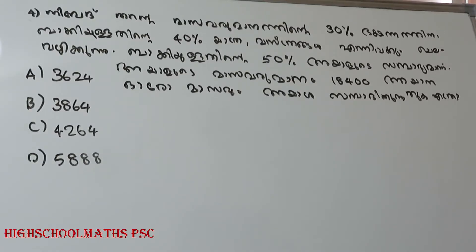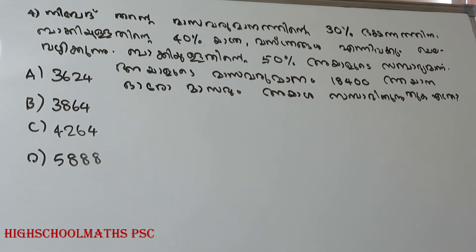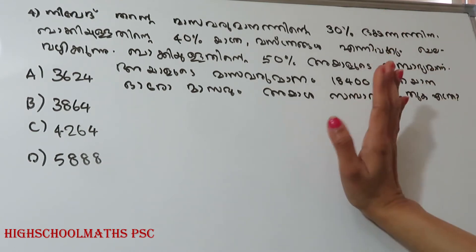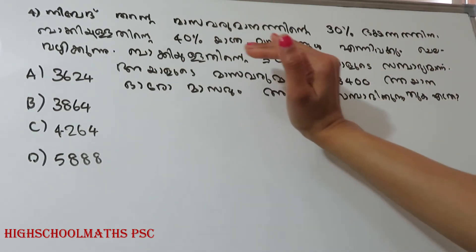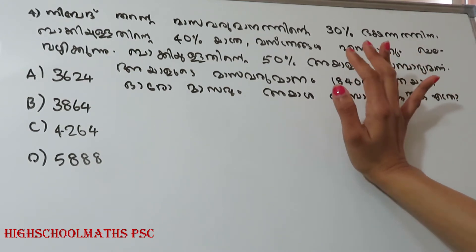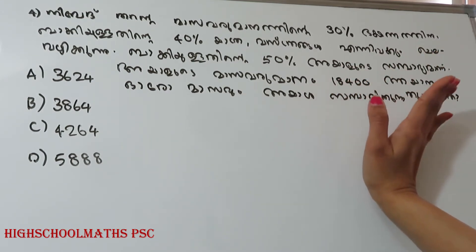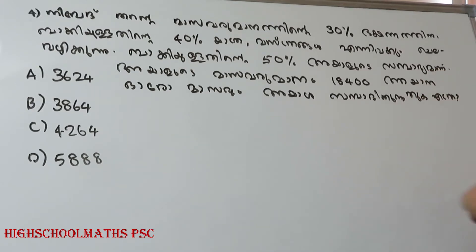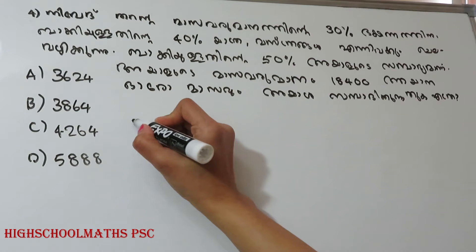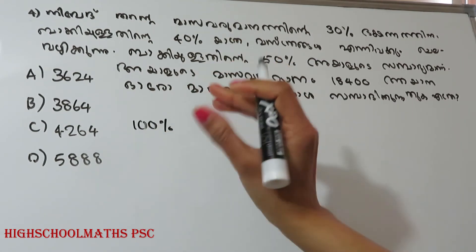Let me ask you a question. Niverth spends 30% of his monthly income on food, 40% of the remaining on conveyance and clothes. He saves 50% of the remaining. If his monthly income is 18,400, how much money does he save every month? We start with a base of 100%.